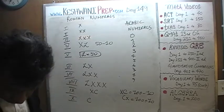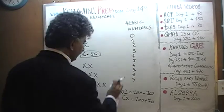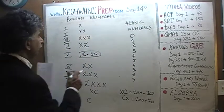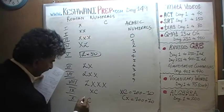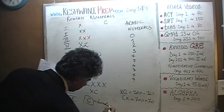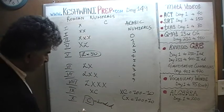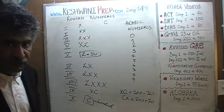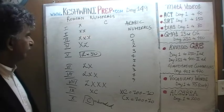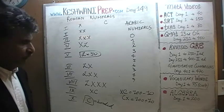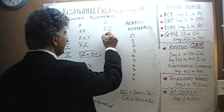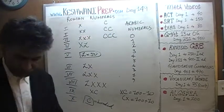Let's move on and do some higher values. We have 100 — C is your 100. 100 is easy to remember because C stands for century, as you already know. C stands for century — hence the symbol. So 100, then we have 200 which is CC, 300 which is CCC. You see the parallel? It's the same exact idea.